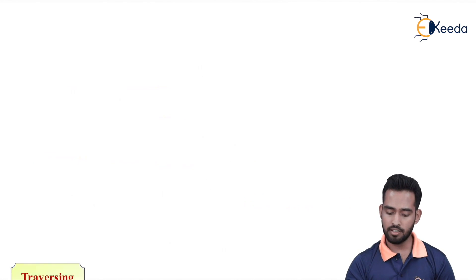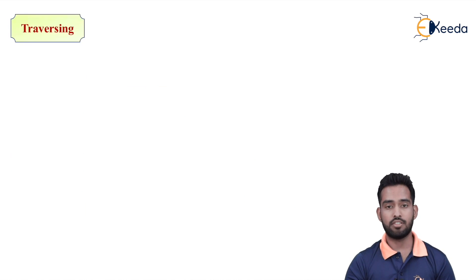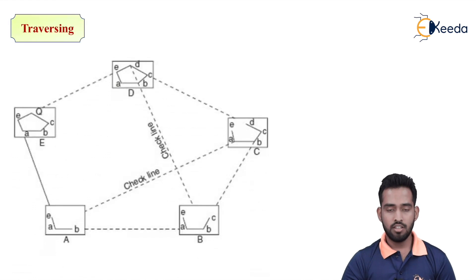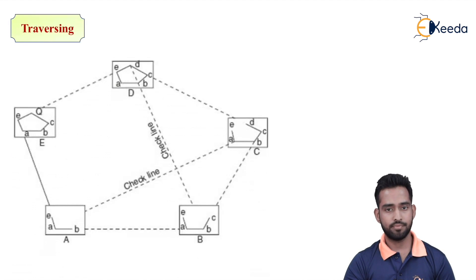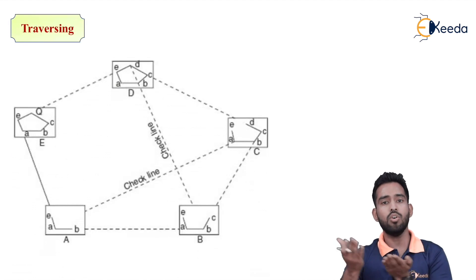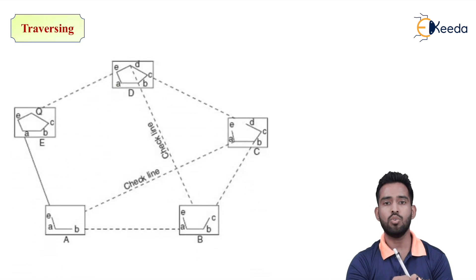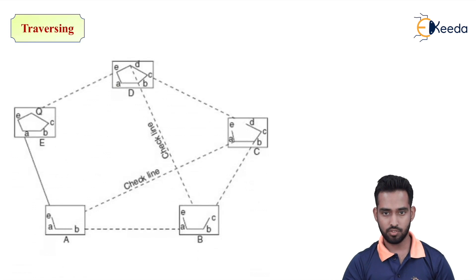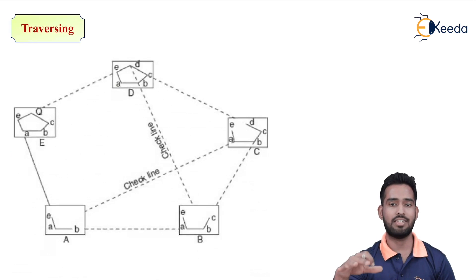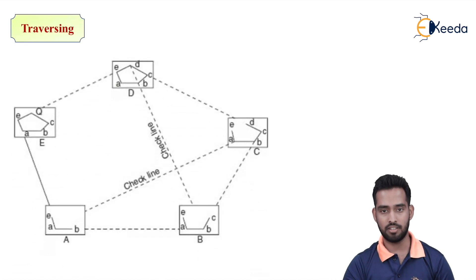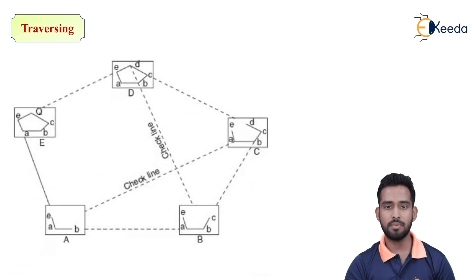The next method is Traversing. In the Traversing method, we have to visit all the points and shift the station to each point. This method is usable whenever it is accessible to go to each point and do all the temporary adjustments. So whenever all the points are accessible, we can use the Traversing method, and it is used for precise work.